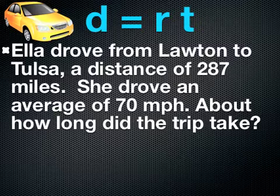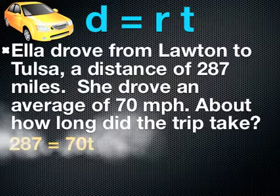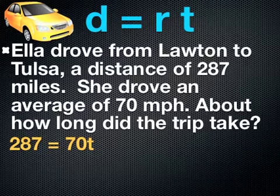So distance is 287 equals the rate was 70 times time. We do not know how long it took. That's what we're trying to find. If you look, 287 equals 70t. 70 times t is what we're doing on the right side.